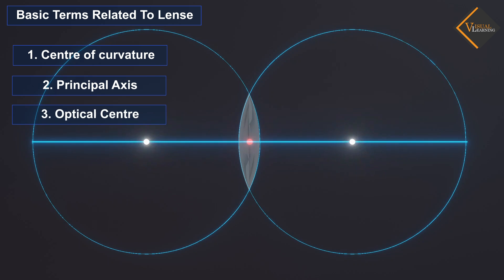Optical center: It is a point within the lens where the diameter of the lens and the principal axis meet.